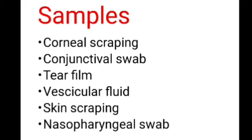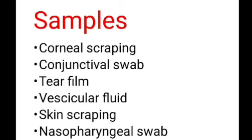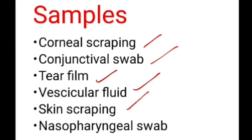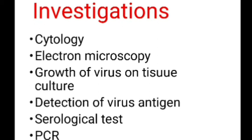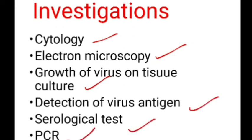Coming to the investigations for HSV keratitis — the samples you can take include corneal scraping, conjunctival swab, tear film, vesicular fluid of the vesicles, skin scraping, and even a nasopharyngeal swab. The investigations performed on these samples include direct examination of infected samples for cytology, electron microscopy, growth of the virus in tissue culture, detection of viral antigen, serological tests, and PCR testing.